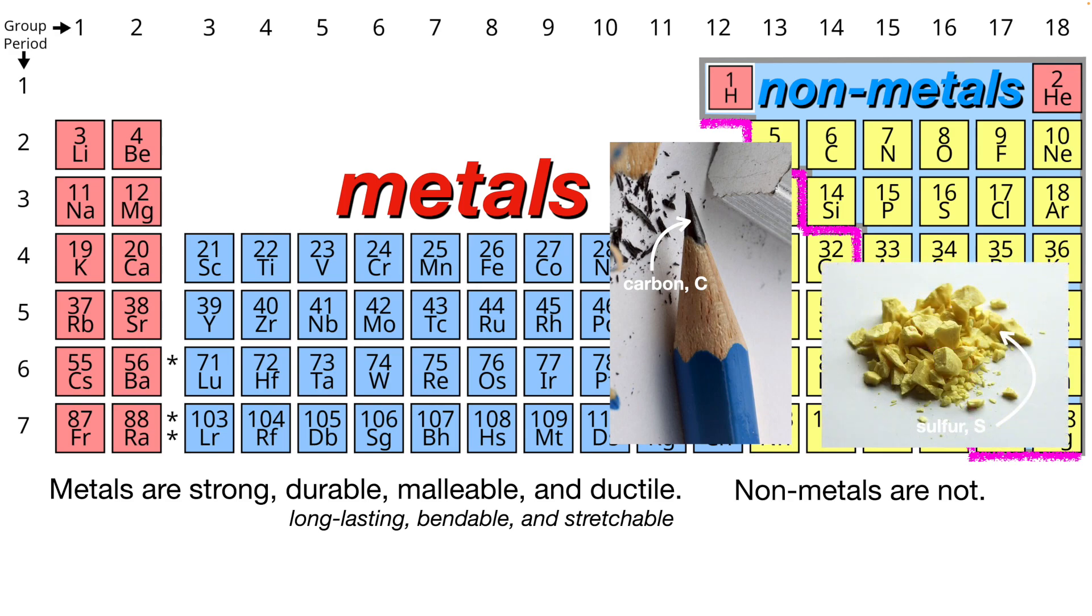Sulfur, when it's solid, is this weird, crumbly, powdery thing. So it is not strong, long-lasting, or ductile or malleable at all. Here's sulfur, and up here is carbon.